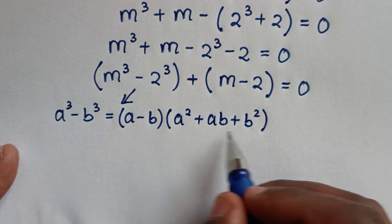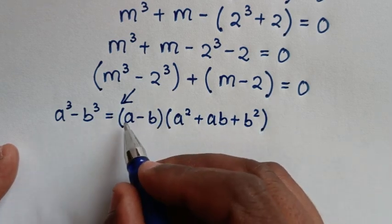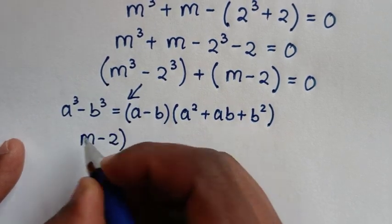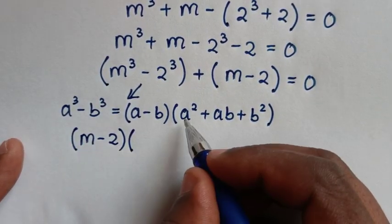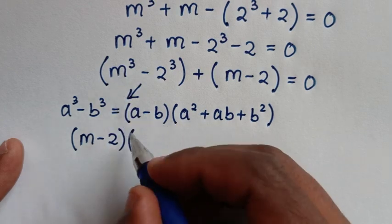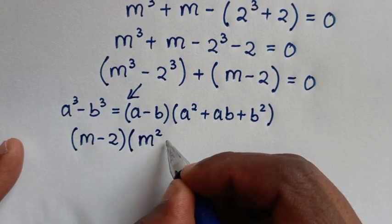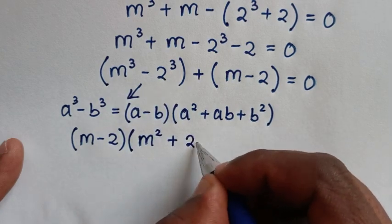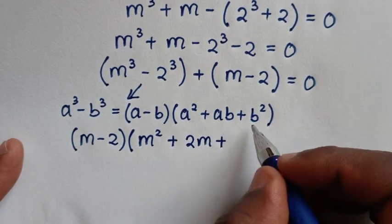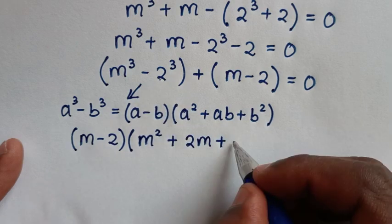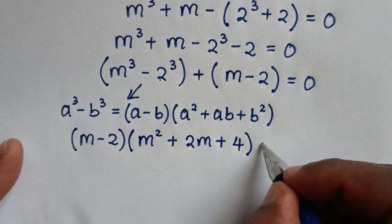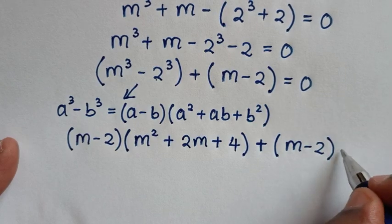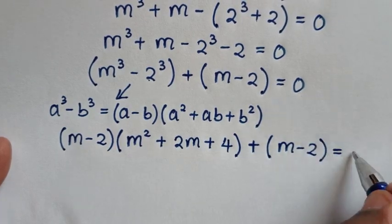Applying this rule: a minus b becomes m minus 2, a² becomes m², ab becomes 2m, and b² becomes 2² which is 4. So we get (m - 2)(m² + 2m + 4) + (m - 2) = 0.